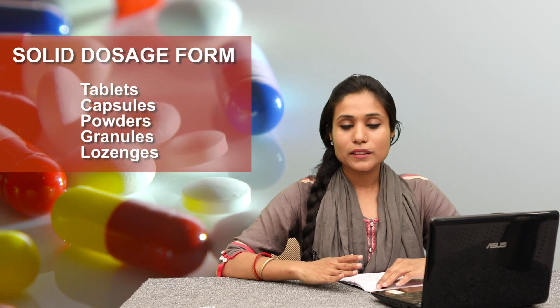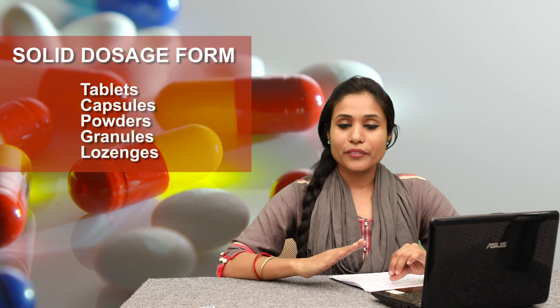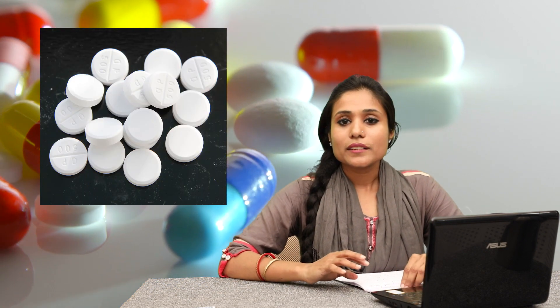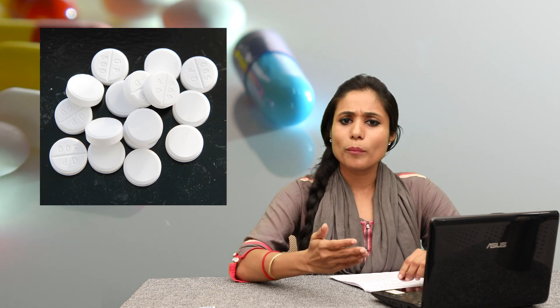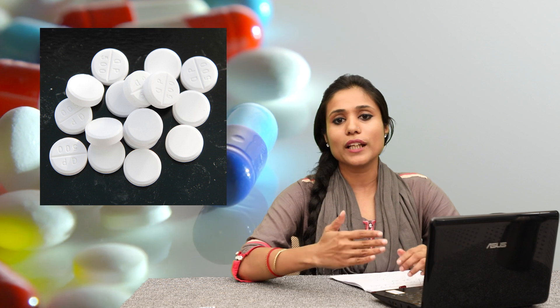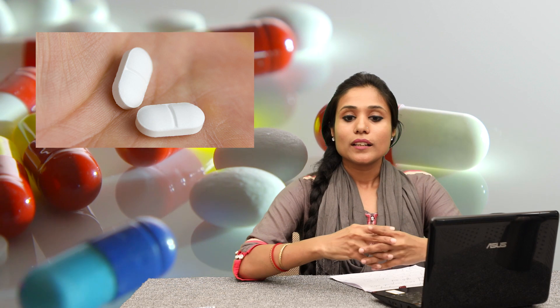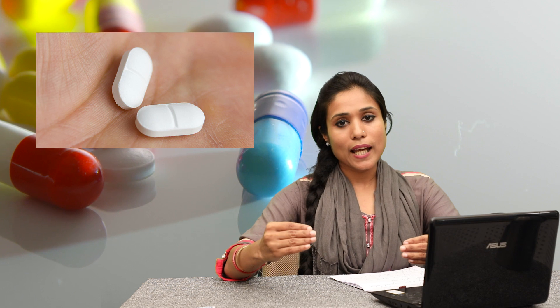Solid dosage forms are distributed into five types: Tablets, Capsules, Powder, Granules, and Lozenges. Tablets are simple. We have studied Paracetamol — it is a very commonly used dosage form which everyone uses in their normal life. Tablets are composed of an active compound plus a non-active substance, that is excipient.